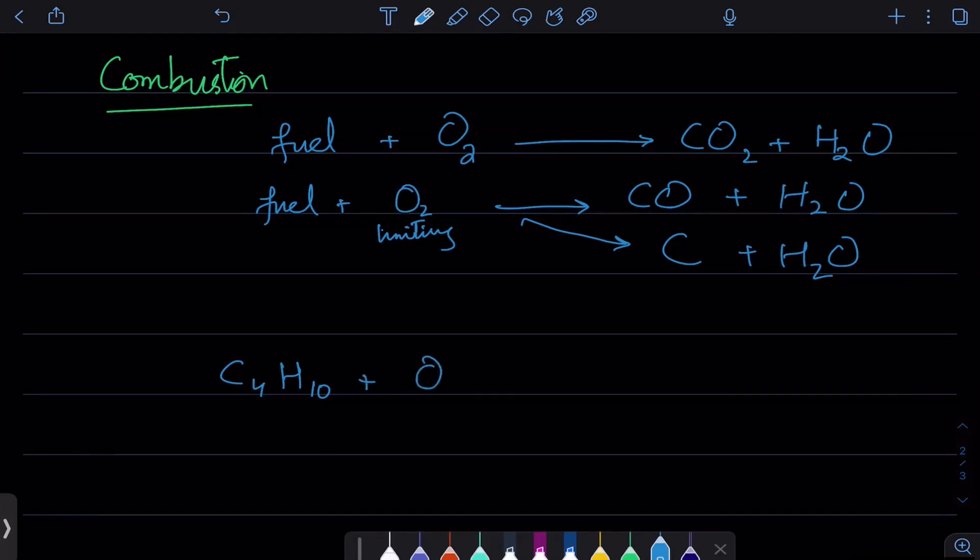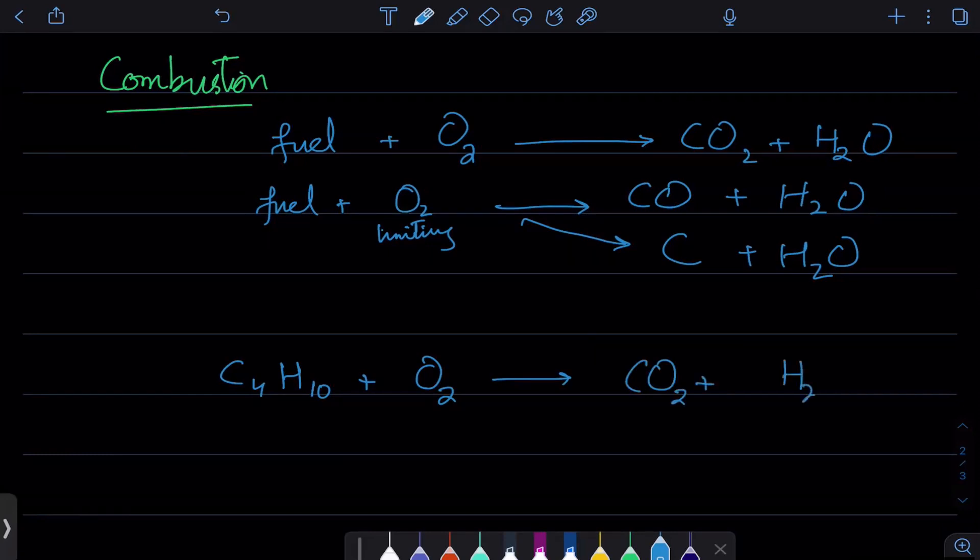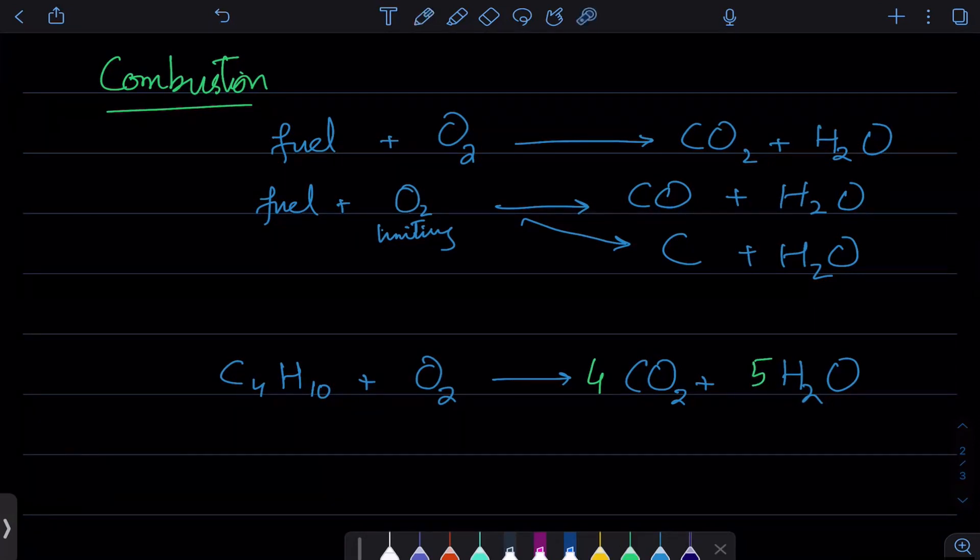Let's say I burn it with unlimited oxygen in excess. Here's what you do: the number of carbons equals the carbon dioxide produced, so it'll be 4 CO2. The hydrogens divided by 2 gives water molecules, so 10 divided by 2 equals 5 water. Now balance the oxygen: I have 4 times 2 equals 8 oxygen here and 5 times 1 equals 5 here, so 8 plus 5 equals 13 on this side and 2 on the other side. The ratio will be 13 over 2.